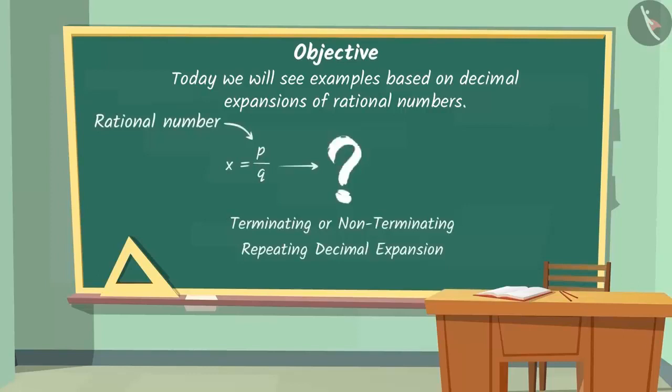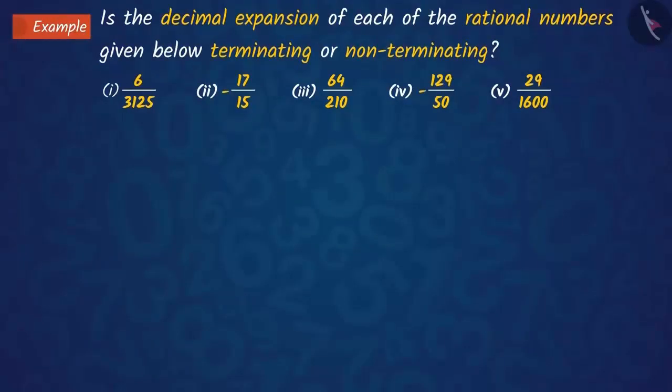Now, we will see an example based on it. Here, without using division, we have to tell which rational numbers have a terminating decimal expansion and which ones have non-terminating decimal expansion.